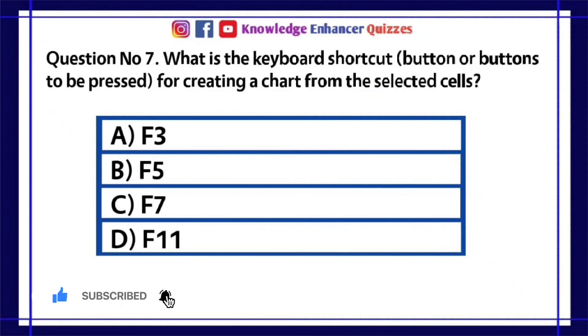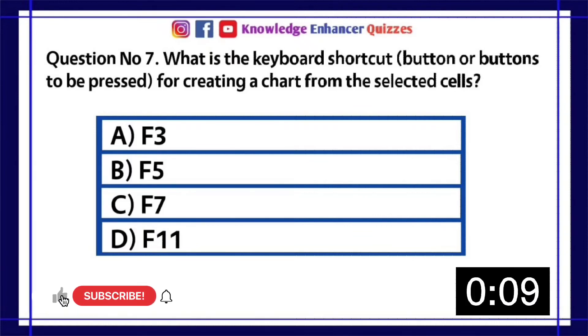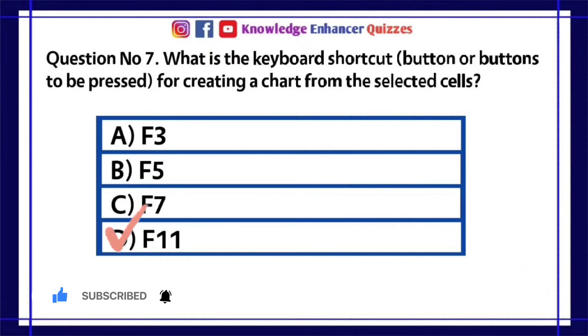Question number 7. What is the keyboard shortcut button or buttons to be pressed for creating a chart from the selected cells? A. F3. B. F5. C. F7. D. F11. Option D is the right answer.